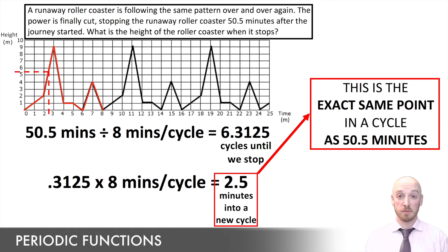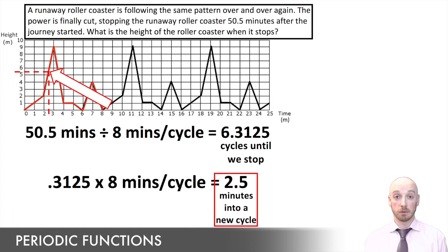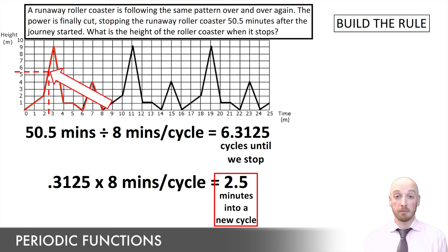At this point in a periodic function question, we always go back to our first cycle to answer. They want to know: at an x value of 2.5, what is the y value — what's the height of the rollercoaster at 2.5 minutes? That height can't be read right off the graph since it doesn't pass through a grid point. So we're going to find the rule that represents the line we hit when we read up from x = 2.5, then plug 2.5 in for x to find y.